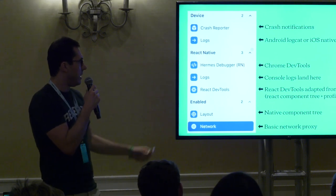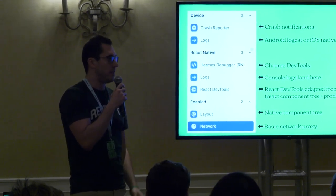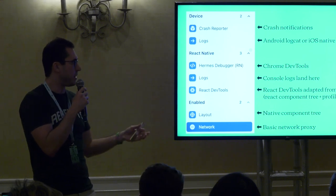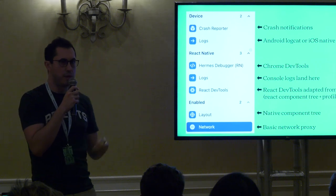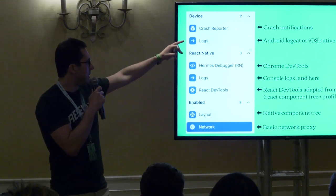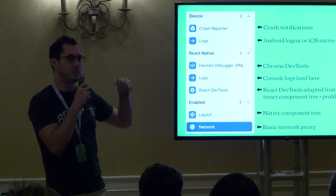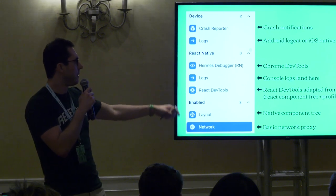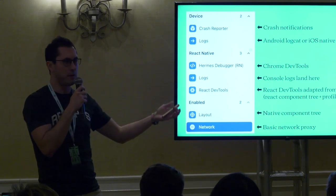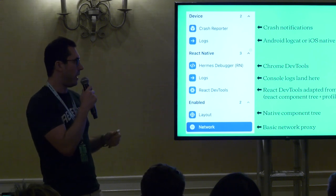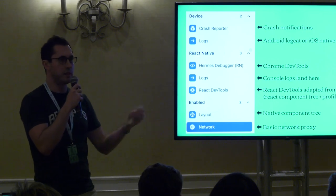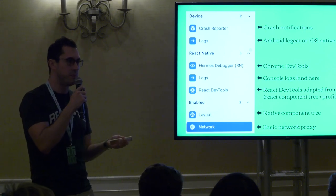For React Native-specific plugins, there's the Hermes Debugger — similar to Chrome DevTools, it's actually an iframe wrapper around DevTools. This is where you see source maps, add breakpoints, see variables, and inspect the call stack. There's also a Logs plugin similar to device logs but specifically for your console logs. Then React DevTools, ported from the web React version, where you can see your component hierarchy and component tree, and use the profiler to address performance issues.